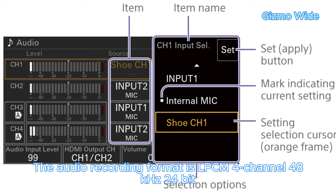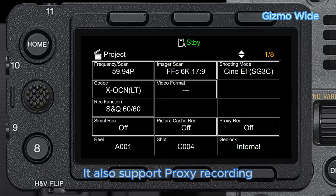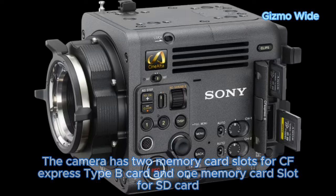The audio recording format is LPCM 4 channel, 48 kHz, 24 bit. The camera has slow and quick motion functions, and also supports proxy recording and time code and user bit. The camera has two memory card slots for CFexpress Type B cards and one memory card slot for SD card.